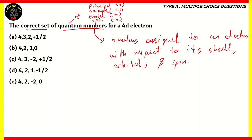How do we figure out the quantum numbers for an electron? Our question pertains to an electron in the 4D subshell. The number 4 represents the shell of that electron, meaning the electron is present in the 4th shell. This 4 is the principal quantum number, so the first quantum number would be 4.